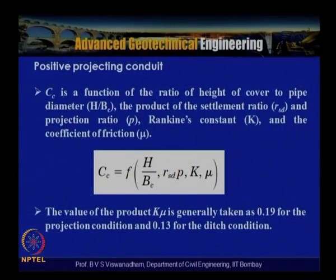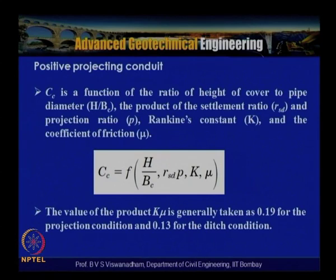In summary, for embankment conditions — whether for flexible or rigid pipes — we use Wc = Cc × γ × bc² to calculate the load on the pipe. The coefficient Cc is a function of h/bc, the product of settlement ratio γsd and projection ratio p, and parameters k and μ. The product kμ is generally taken as 0.19 for the projection condition and 0.13 for the ditch condition.